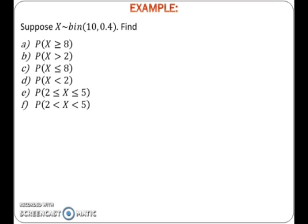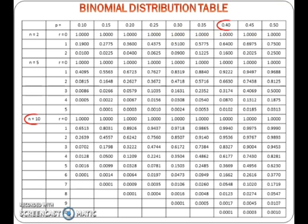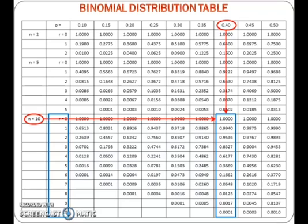Let's look at an example. Suppose that a random variable x has a binomial distribution with n equals 10 and p equals 0.4. The combination of n equals 10 and p equals 0.4 exists in the table. Thus, the probabilities can be found by using the table. This is the part of the table we will be focusing on to find probabilities for n equals 10 and p equals 0.4.